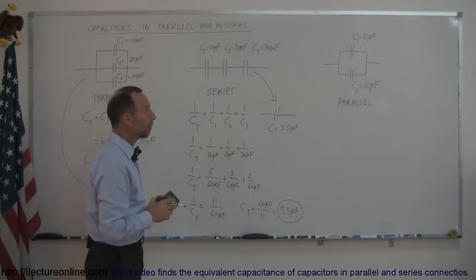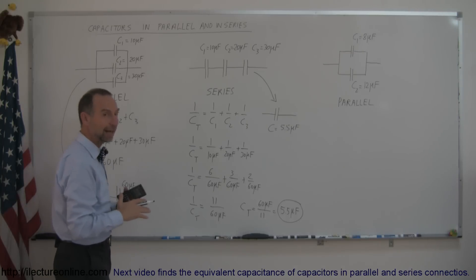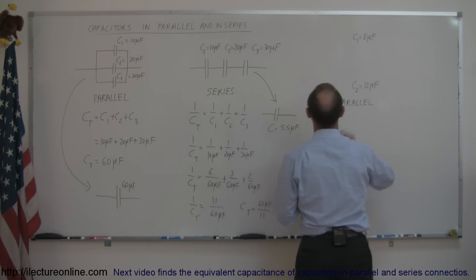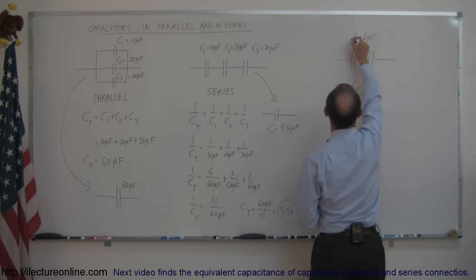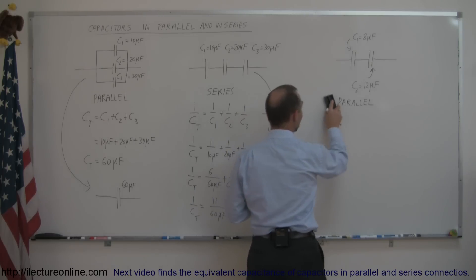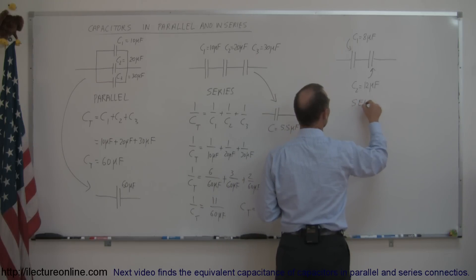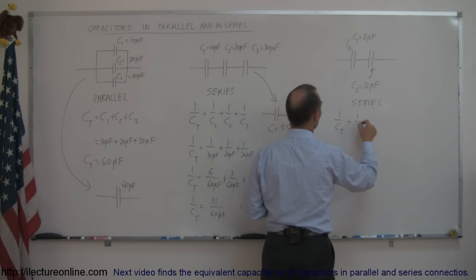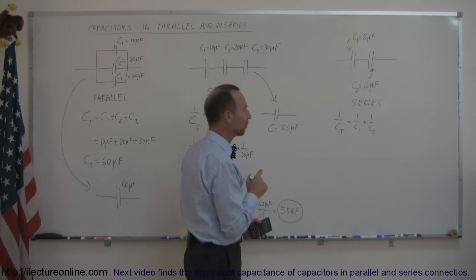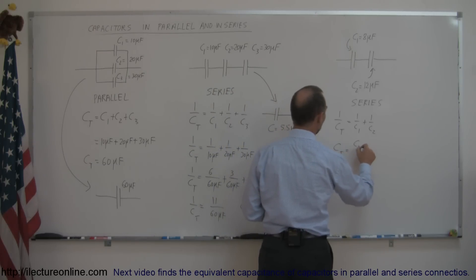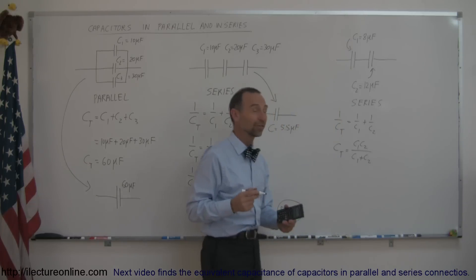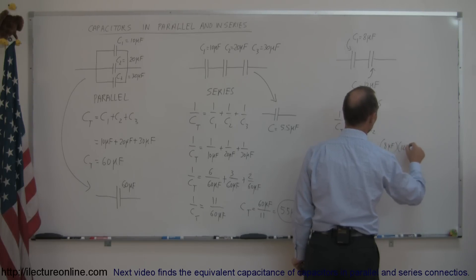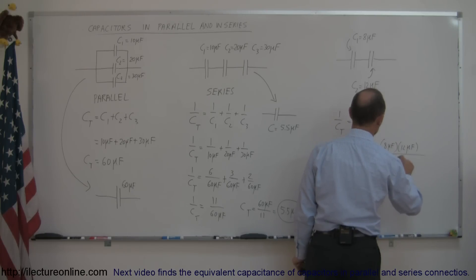Now let's look at two capacitors in series specifically. You could use the general formula, but if you algebraically solve 1/C_total = 1/C1 + 1/C2 for C_total, you get the product-over-sum equation: C_total = (C1 × C2) / (C1 + C2). That's much easier to work with when there are only two capacitors in series.